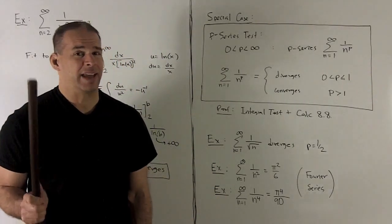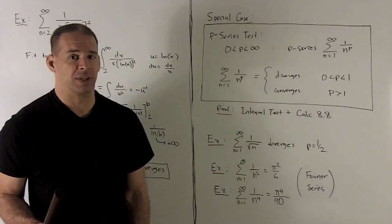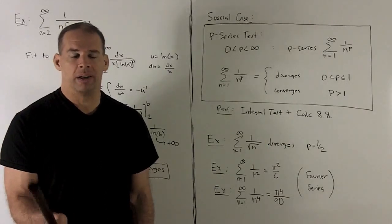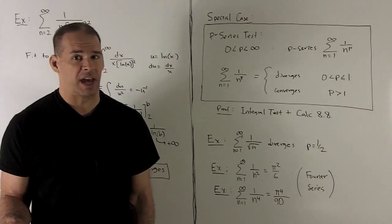If you can remember that, then that gives away the whole p-series test. Because then you know the side that has 2, if you break it at 1, the side that has 2 is going to be the side that converges.